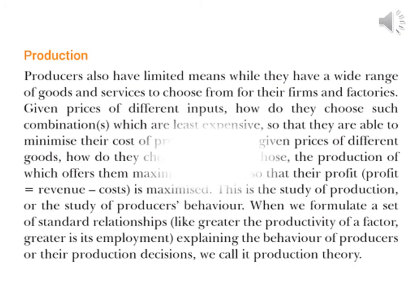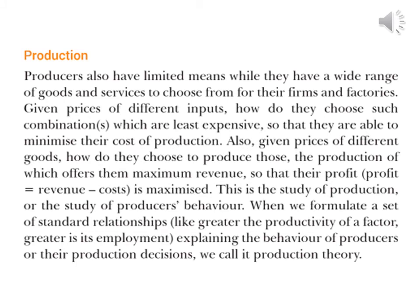The second component is production. Producers also have limited means while they have a wide range of goods and services to choose from their firms and factories. Given the prices of different inputs, how do they choose combinations that are least expensive so that they are able to minimize their cost of production?